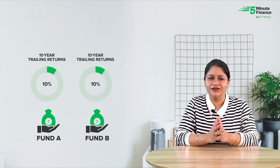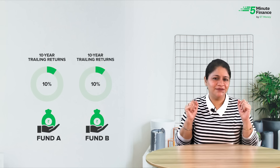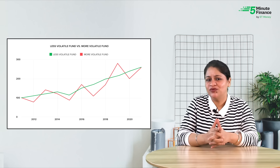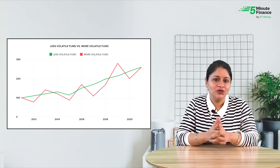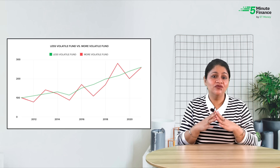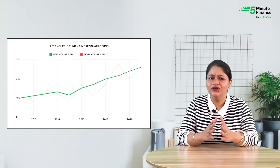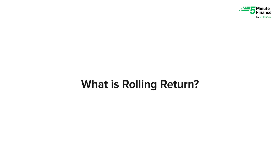Now, consider this: two funds — Fund A and Fund B — have both given trailing returns of 10% over the last 10 years. Which one is better based on trailing returns alone? Looking at the chart on screen, while the average annual return of both funds is the same, one is far more volatile than the other. You would be better off with the less volatile fund. Trailing returns, being point-to-point, fail to capture the fluctuations in a fund's performance during that period.